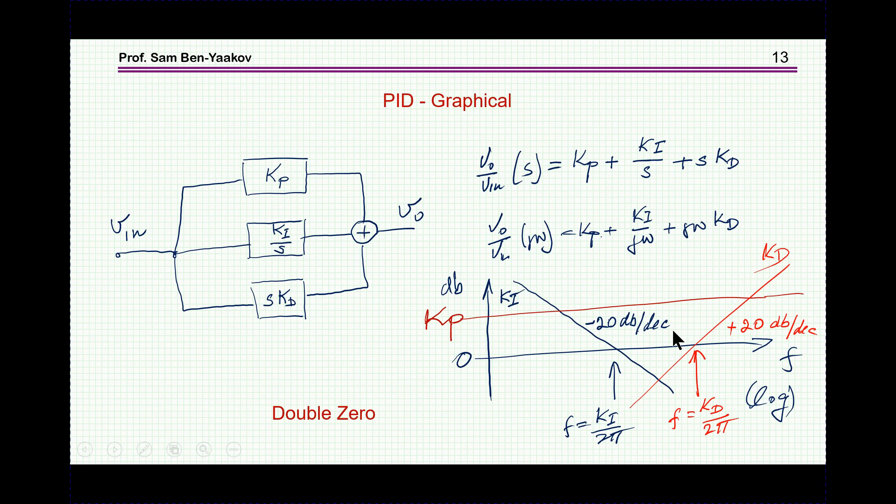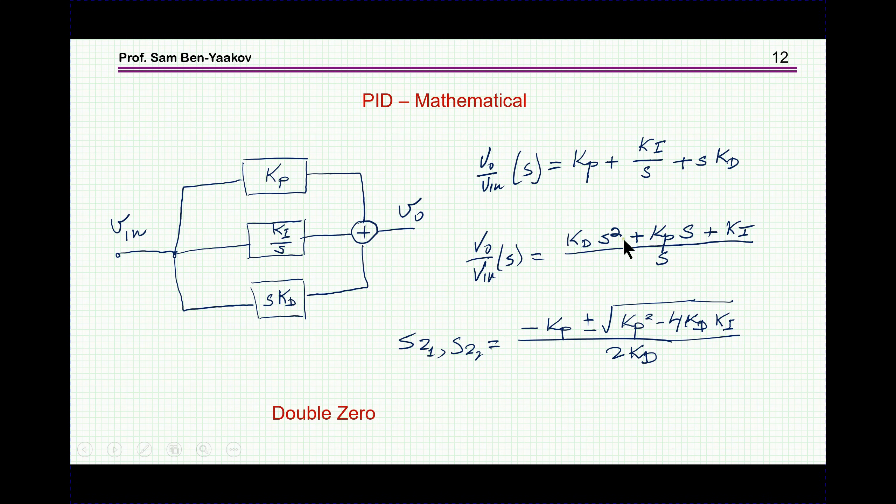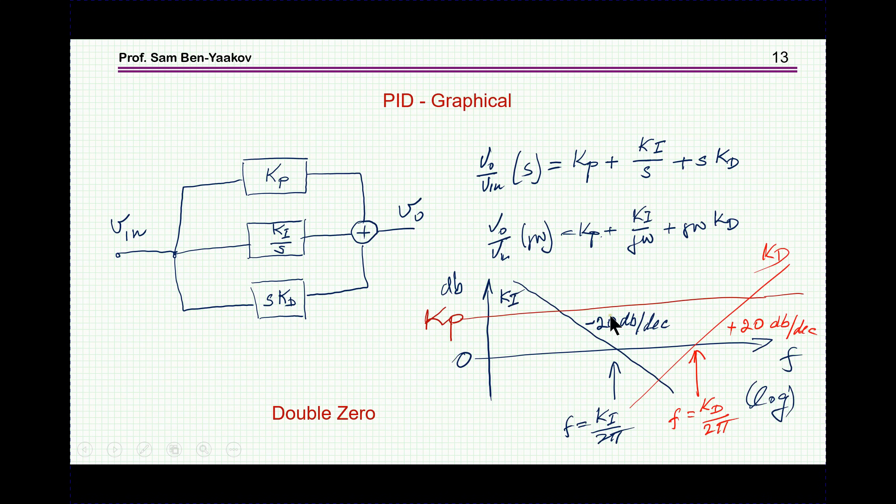And we can also generate, very nicely, the transfer function. Of course, we can go back and do it from this expression, but here is a nice graphical way to do it. We can plot the three components, like here, and here, this will be the Ki, the integrator, which goes down by 20 dB per decade. This goes up, like, plus 20 dB per decade, and of course, the Kp is a straight line. Now, the crossover here is when this term, or this one, the absolute value is equal to one, so, this frequency is Ki over 2π, and here it's Kd over 2π.